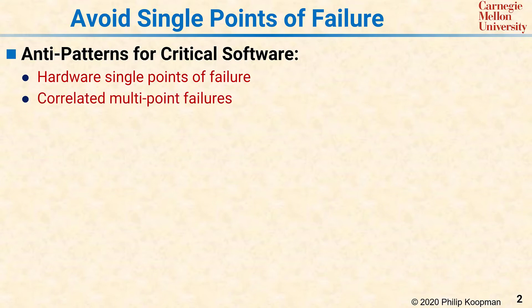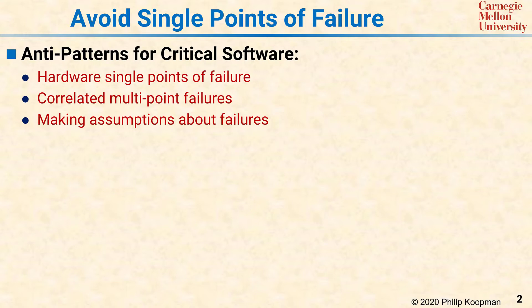You should also have no multiple point failures that are sufficiently likely to occur in a correlated way. You should not be making any assumptions that the failures will be well-behaved, such as assuming that computers will simply crash instead of sending erroneous data. Finally, you should not assume that software components will fail independently unless you can demonstrate that the software failures are uncorrelated and diverse, or that the software in general will not fail because it has been developed to a high safety integrity level.